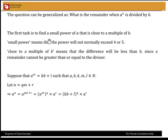That's a very vague thing — what do we mean by small power? It's normally a power that does not exceed 4 or 5, because if you have any number — in this case we had 7 — 7 to the power of 4, 7 to the power of 5, we are getting to be big, huge numbers. So we want that small power to not exceed 4 or 5.